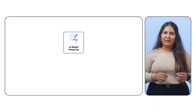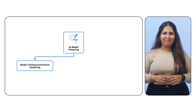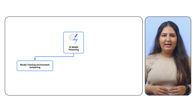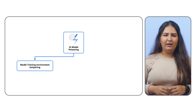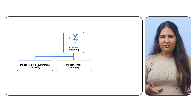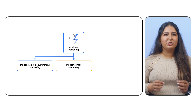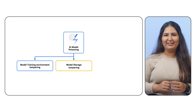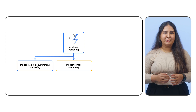Now, moving beyond the data itself, the model can also be a target for attack. Attackers can manipulate your model code or weights if your training environment is not hardened against supply chain attacks and tampering. This could lead to model poisoning and compromise your model integrity from inside out. But even if your model is securely trained, it can still be exfiltrated and tampered with if the model storage systems are not robust to attacks. This could allow attackers to replace existing models with malicious ones.